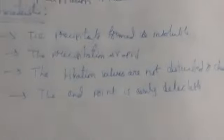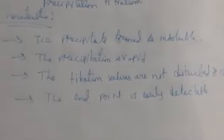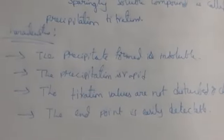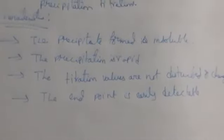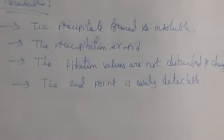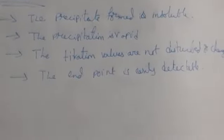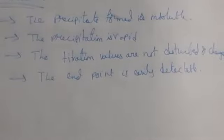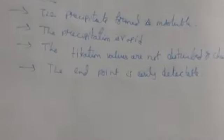Also the endpoint should be easily detectable. So these are the conditions we should have to get the precipitation titrations. The precipitate forming in the conical flask must be compulsorily insoluble, the precipitation must be rapid, the titration values should not be disturbed or changed, and the endpoint should be easily identifiable. These are the general characteristics of precipitation titrations.